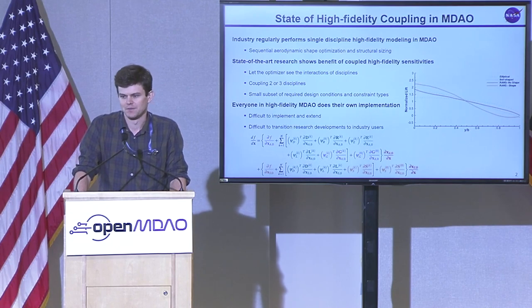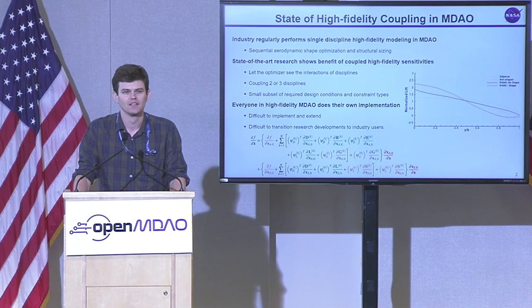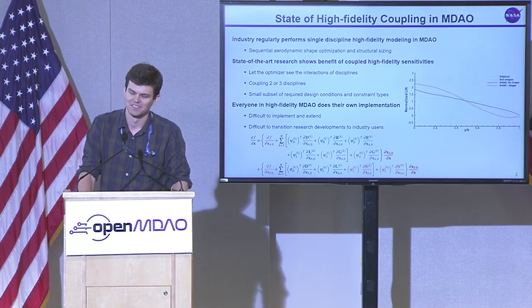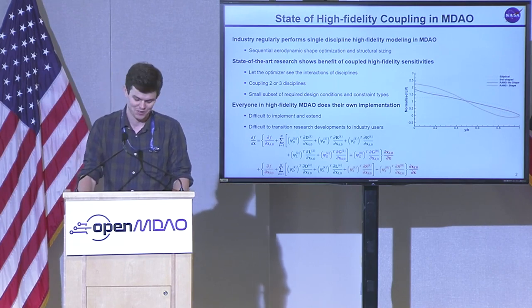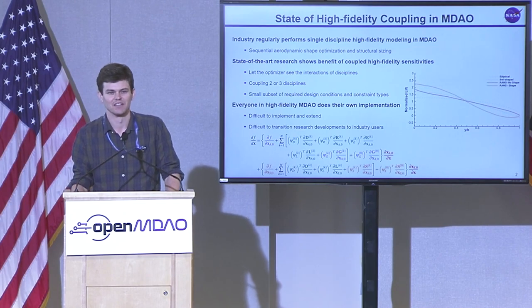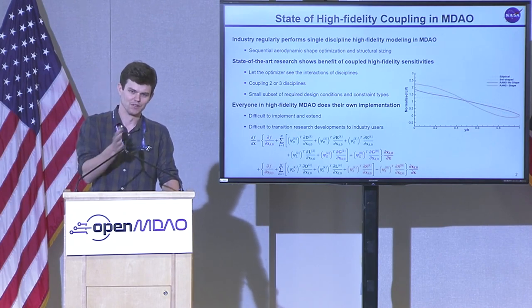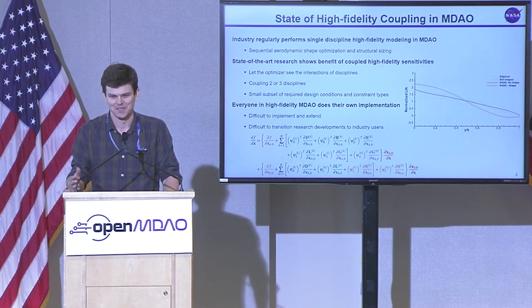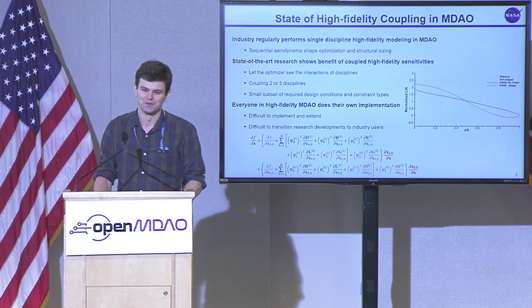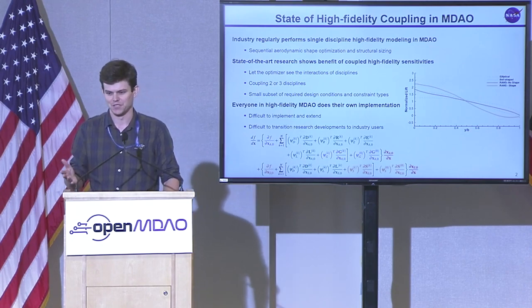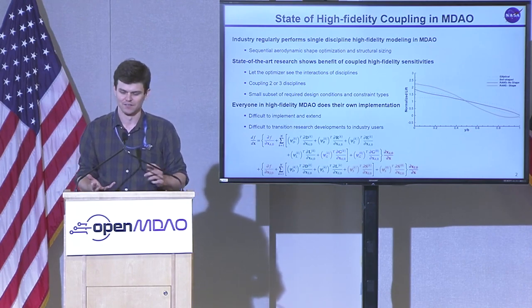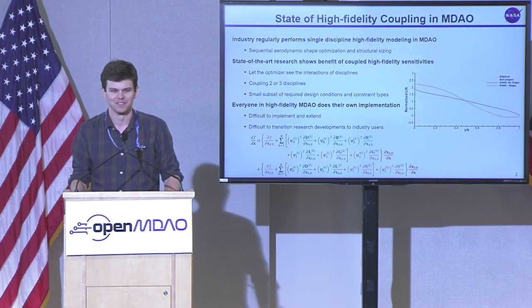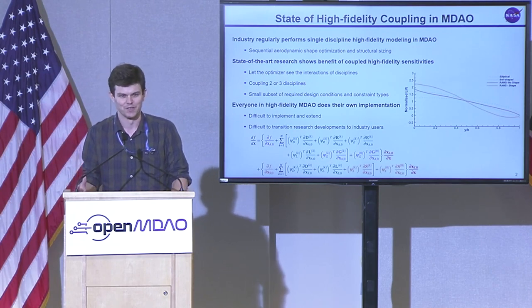With high-fidelity optimization, we're pretty limited in the problems we can do — maybe two or three disciplines at a time — and we don't have all the constraints that we need. Optimizers are going to tell you which constraints you don't have. So we need to figure out how to integrate these tools with some of our low-fidelity tools to really form a complete optimization problem. Another problem with this field is that, at least up until IMFIS, everyone's kind of done their own implementation of their framework. Michigan had a code, Georgia Tech had a code, Wyoming, and SU2 had two or three in there too.